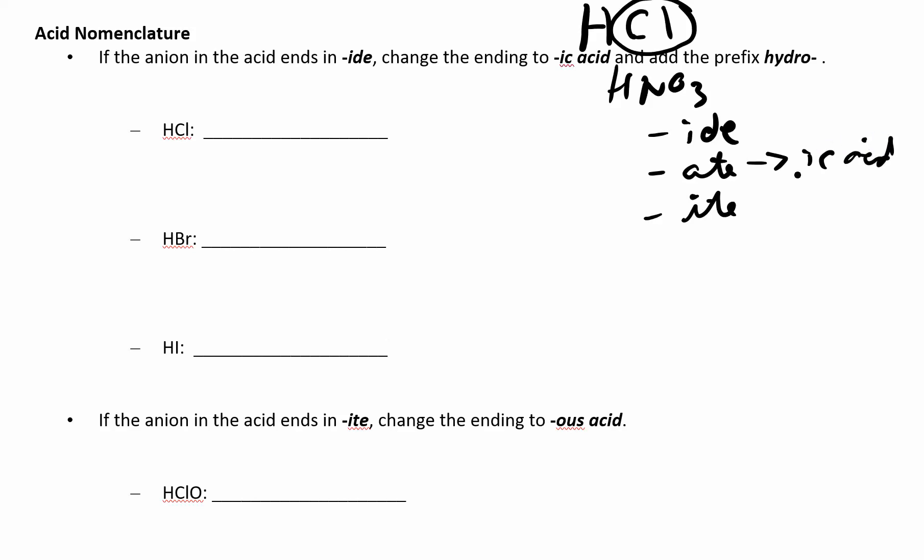If it ends in -ate, you drop the -ate off of that polyatomic ion and change it to -ic acid. If it ends in -ite, you drop the -ite and change it to -ous acid. If it ends in -ide, you drop the -ide and change it to -ic acid, but also add a prefix to distinguish it from whatever polyatomic ion ended in -ate. So you have hydro blank -ic acid.